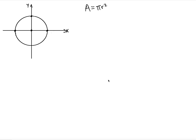We would like to derive the area of the circle using the single integral, and the area formula is pi r squared. The first thing we're going to do is center this circle at the origin, and we're going to label these points r, zero, and negative r, zero.